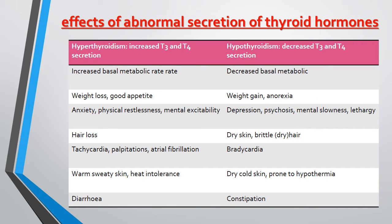Now, the effects of abnormal secretion of thyroid hormones. First is hyperthyroidism, where there is increased T3 and T4 secretion. Second is hypothyroidism, where as the name suggests, there will be a decreased amount of T3 and T4 secretion.